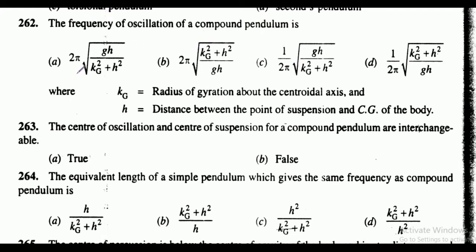Question 262: the frequency of oscillation of a compound pendulum. The options are shown where Kg equals radius of gyration about the centroidal axis and h equals distance between the point of suspension and CG of the body. The correct answer is option C: 1 upon 2 pi into under root of gh upon Kg square plus h square.